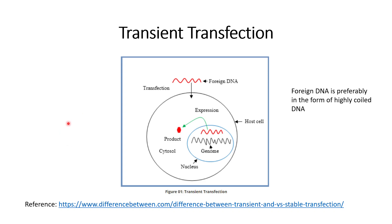In this video we will discuss about different kinds of transfection. First, let us start with transient transfection. In transient transfection, the foreign DNA that we are inserting into a host cell will not integrate with the host genome, and because of this it will not code for its protein for a longer duration of time. Instead, this DNA will remain only for a small duration of time.